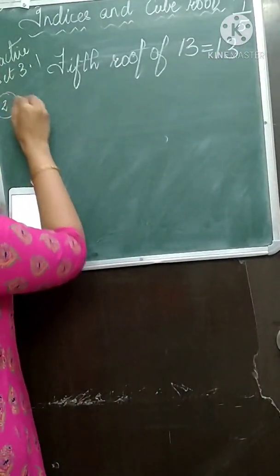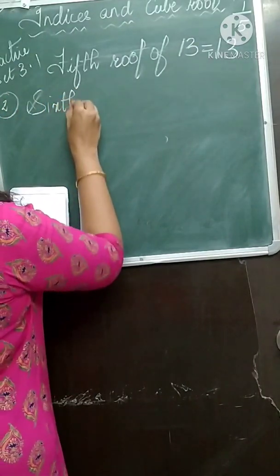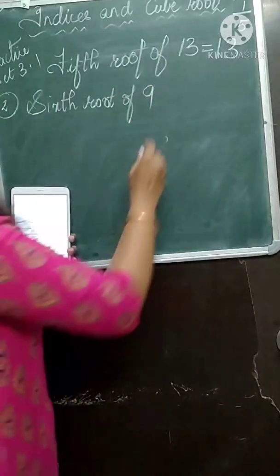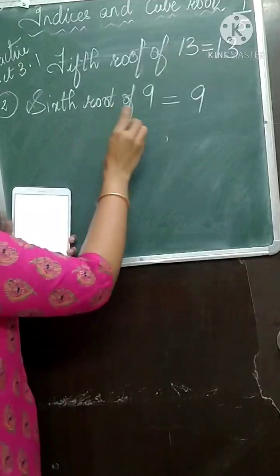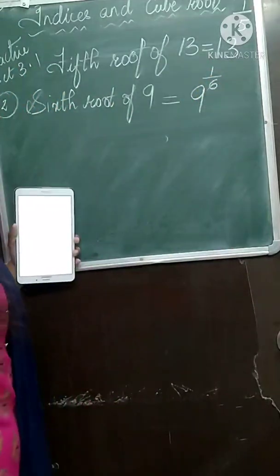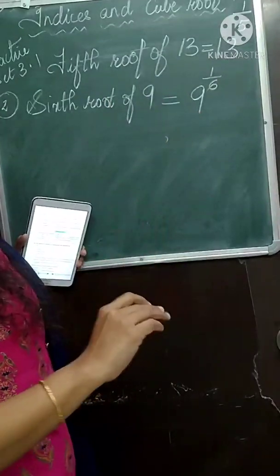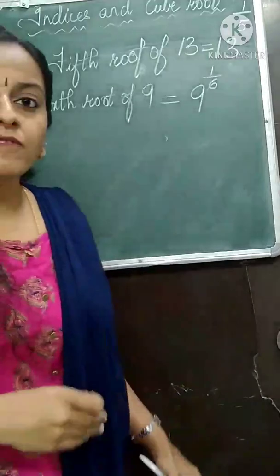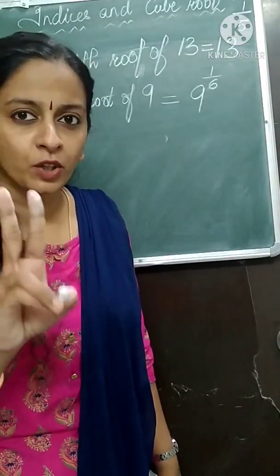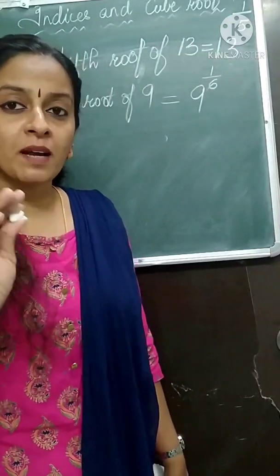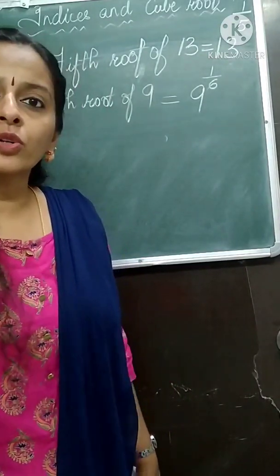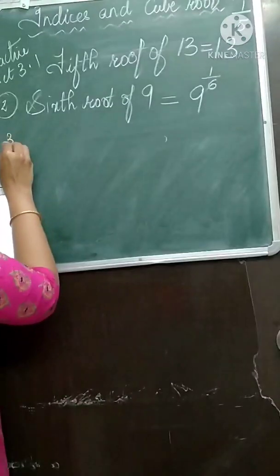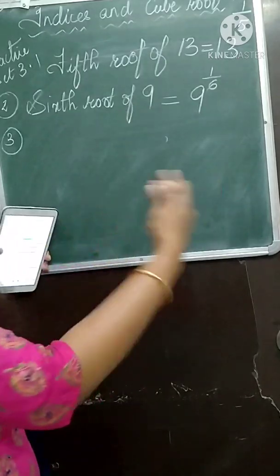Similarly, the second one: sixth root of 9. This you will write as 9 raised to 1 upon 6, because sixth root means 1 upon 6. Root means that digit comes as the denominator. Square root means 2, cube root means 3, fourth root means 4, fifth root means 5, and so on.